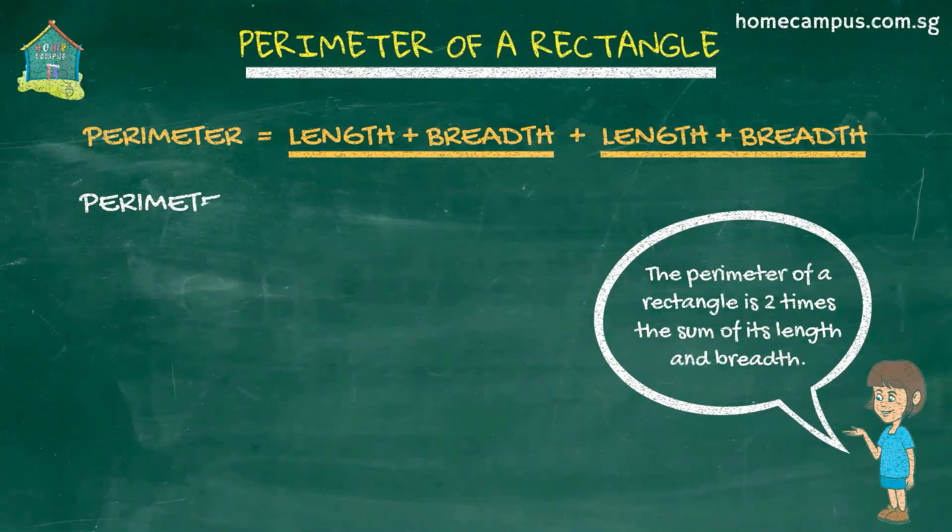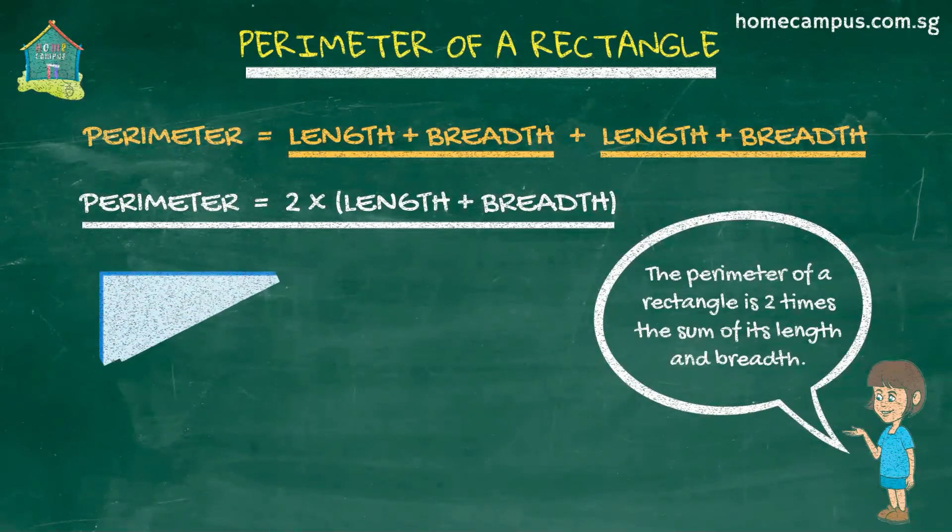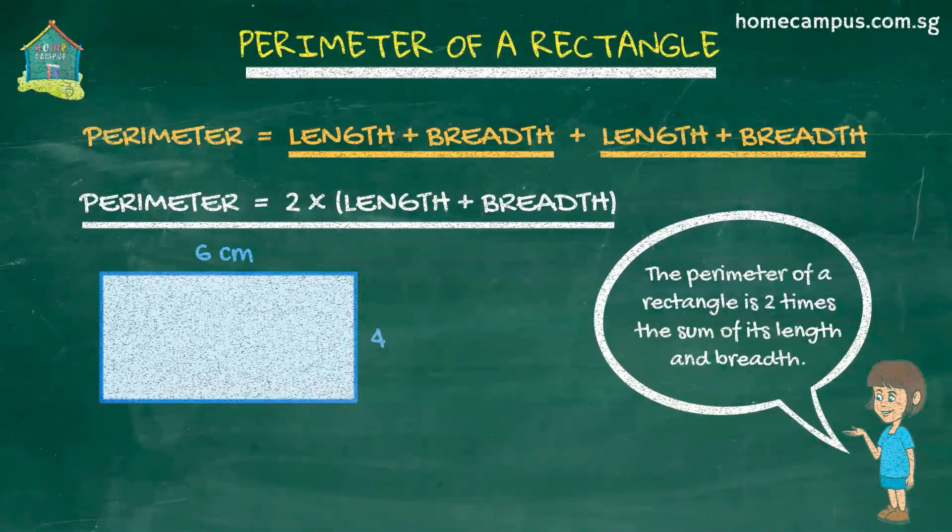So that's the formula to calculate the perimeter of a rectangle. Let's see an example now. Here is a rectangle whose sides are six centimeters and four centimeters. What will be its perimeter?